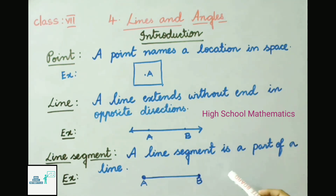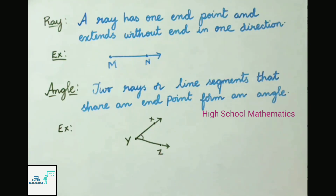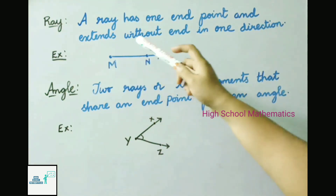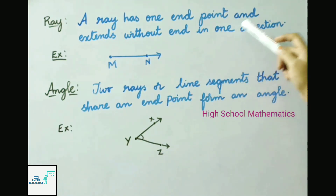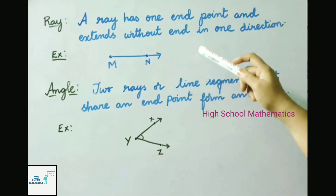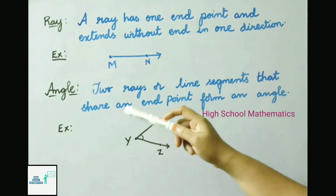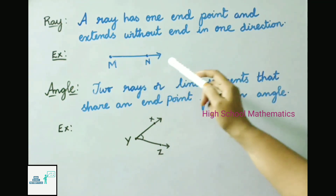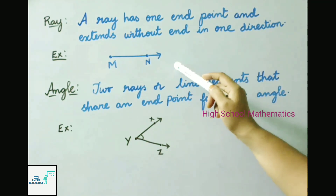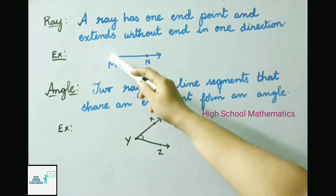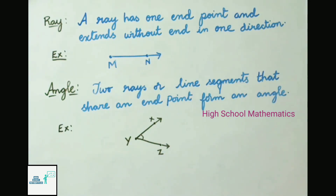A line segment is a part of a line. Example: line segment AB. Now, what is a ray? A ray has one end point and extends without end in one direction. Here we have drawn a ray with only one end point, called ray MN.